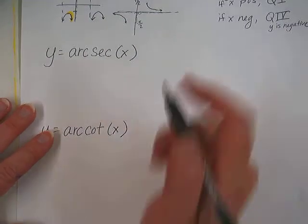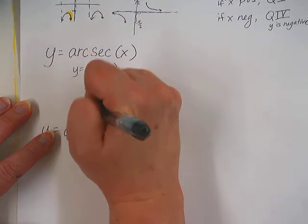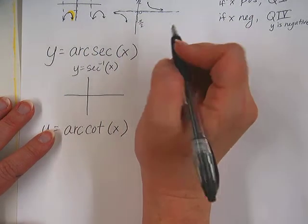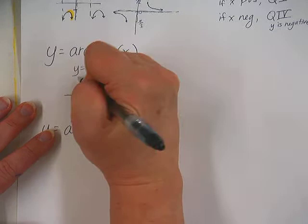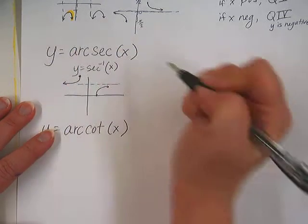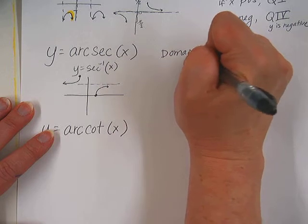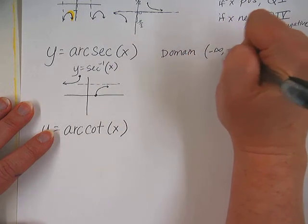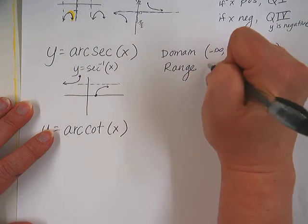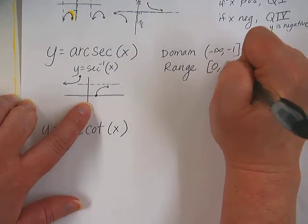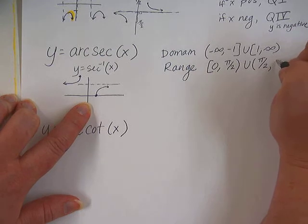Arc secant is the inverse of secant, which is the reciprocal of cosine. So for that one, we're actually going to be using pieces of the graph from quadrant 1 and then up here in quadrant 2. So the domain for secant will be from negative infinity to negative 1 and 1 to infinity. And then the range will be from 0, and this time the asymptote is at pi halves, so to pi halves, and then pi halves to pi.